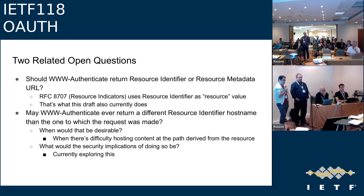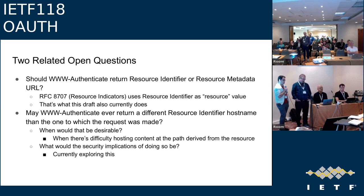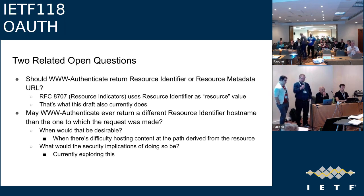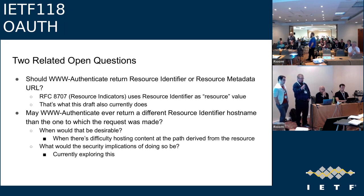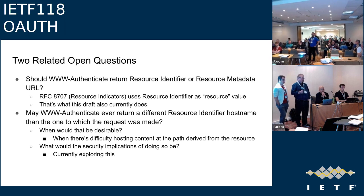George raised a point: when going through the resource indicators draft, the resource indicator itself can be logical — it doesn't have to be a URI to something, it could be a URN. In that context, would it make it more difficult for someone to find the metadata? Is there value in specifying that the thing in WWW-Authenticate should be a pointer to actual metadata — the full URL — rather than a potential logical indicator? Justin Richer added: you're actually not supposed to do a dot well-known on anything that has a path already, though there is a defined way to do it as the AS metadata says.